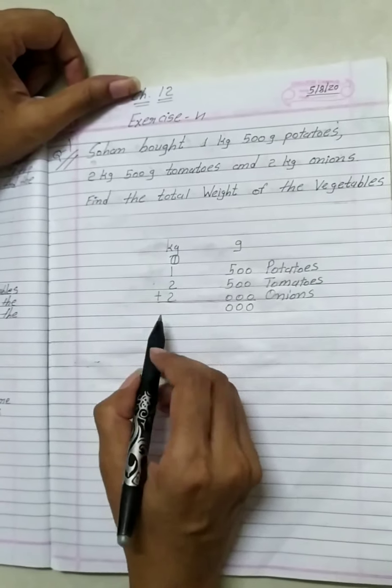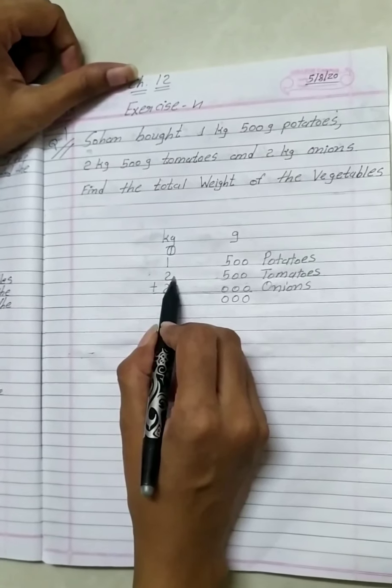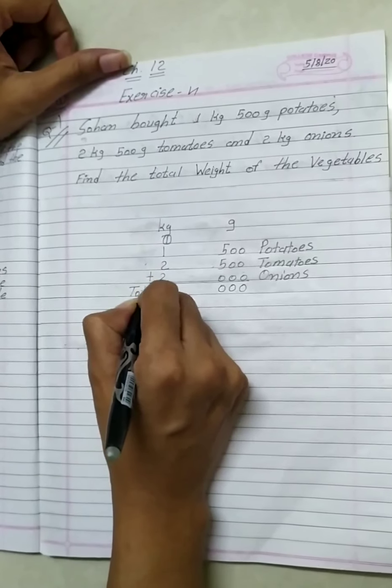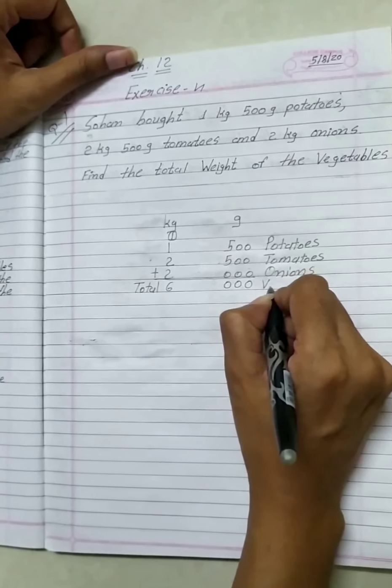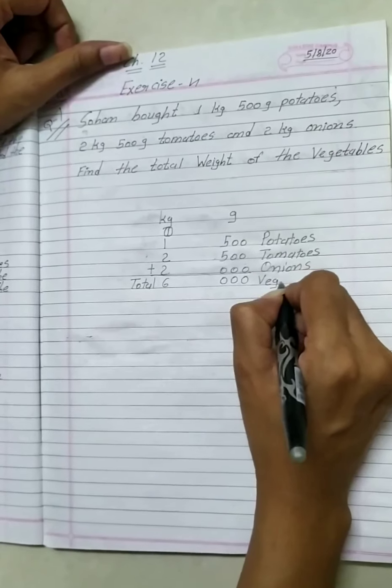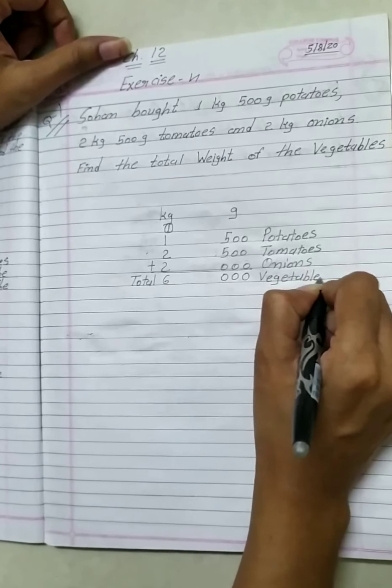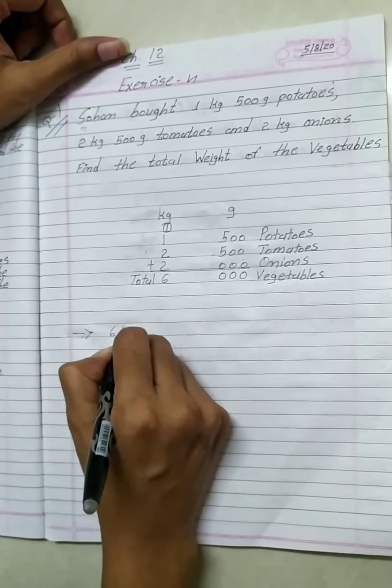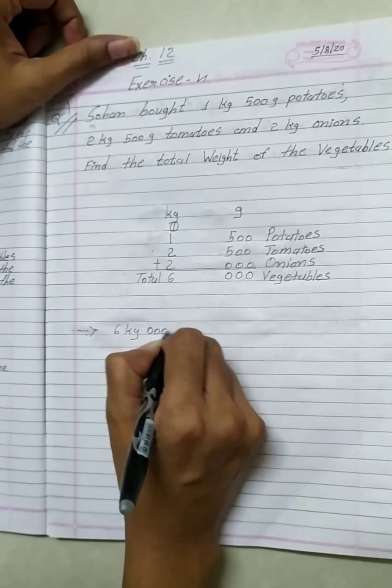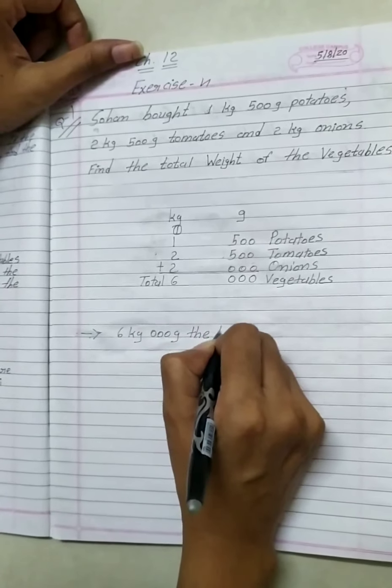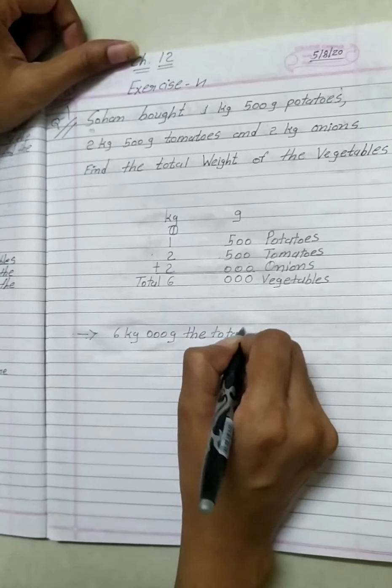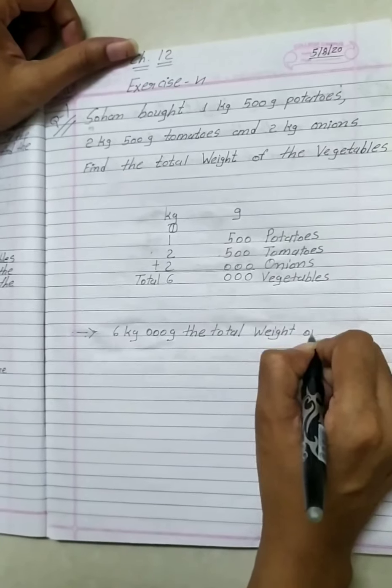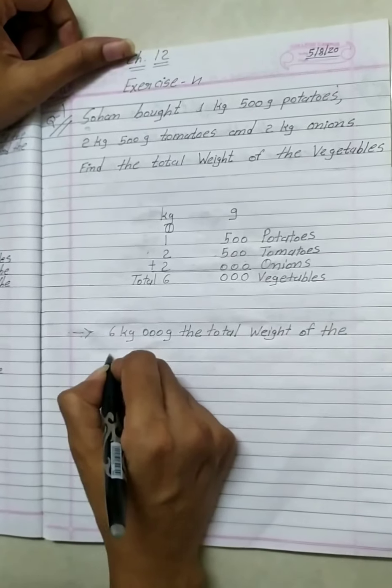1 plus 1 equal to 2. 2 plus 2 equal to 4. 4 plus 2 equal to 6. So total weight of vegetables is 6 kg. The last line is 6 kg, the total weight of the vegetables.